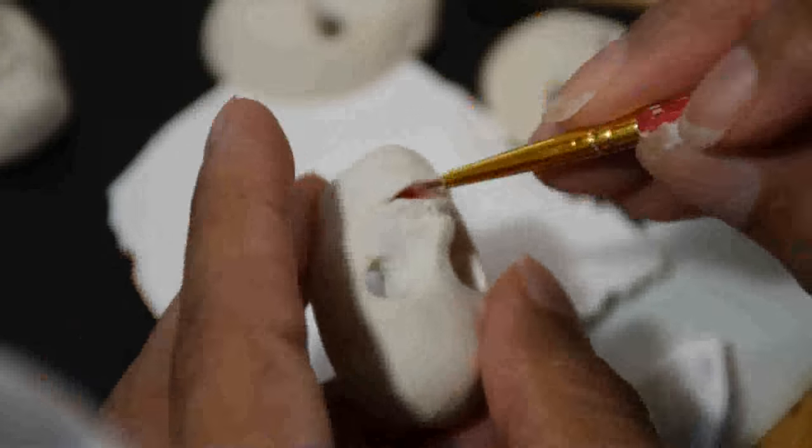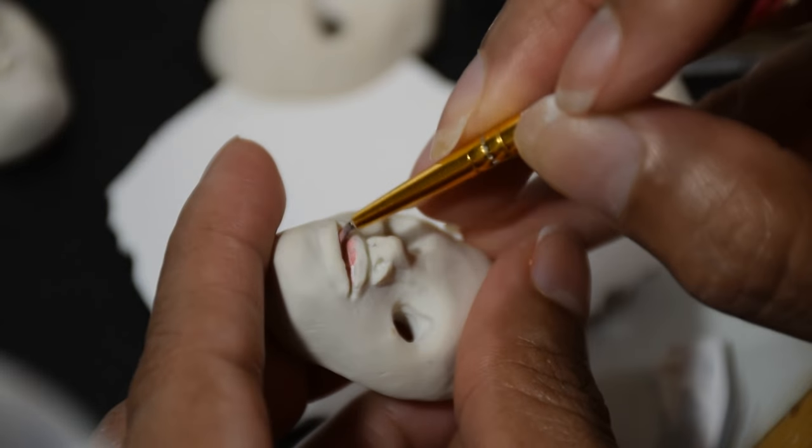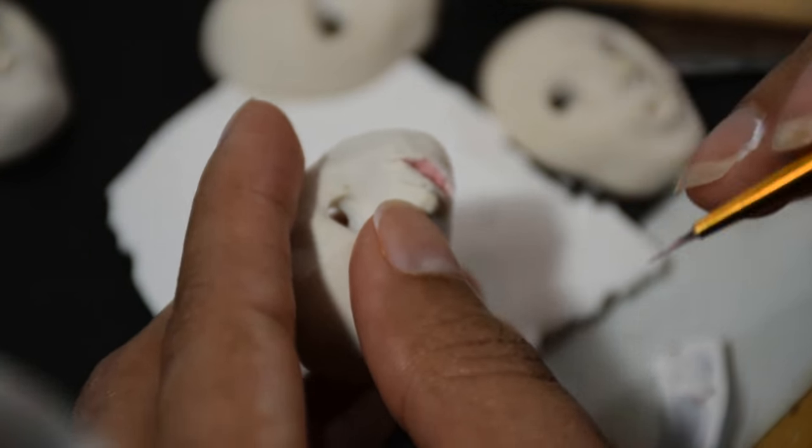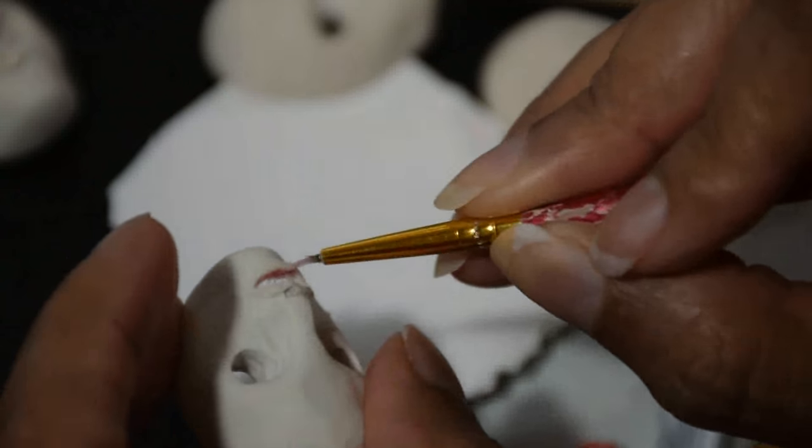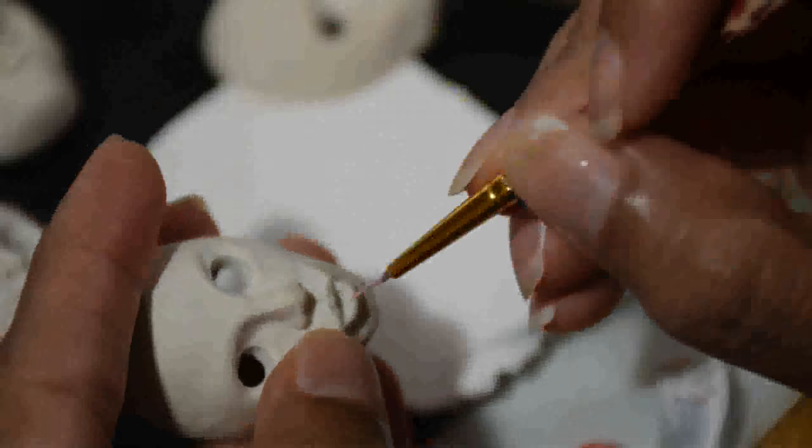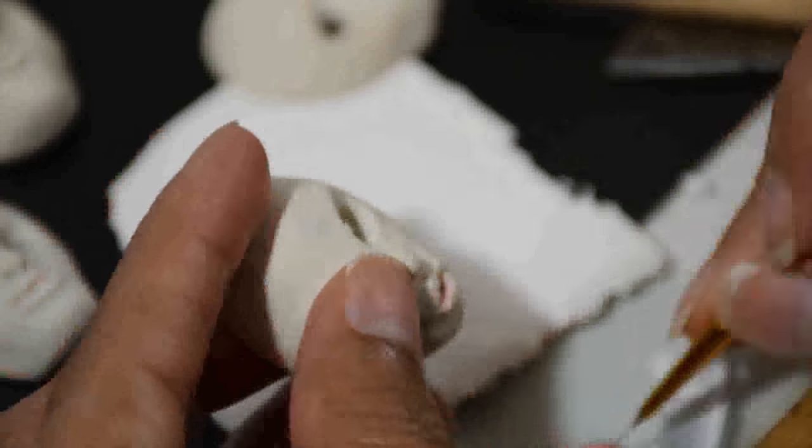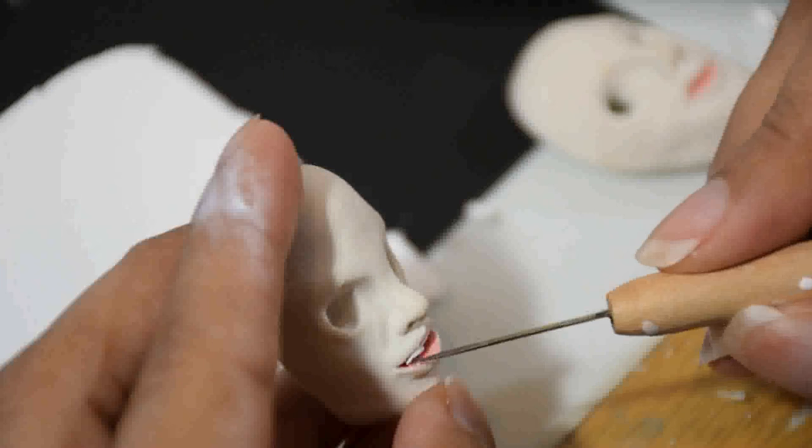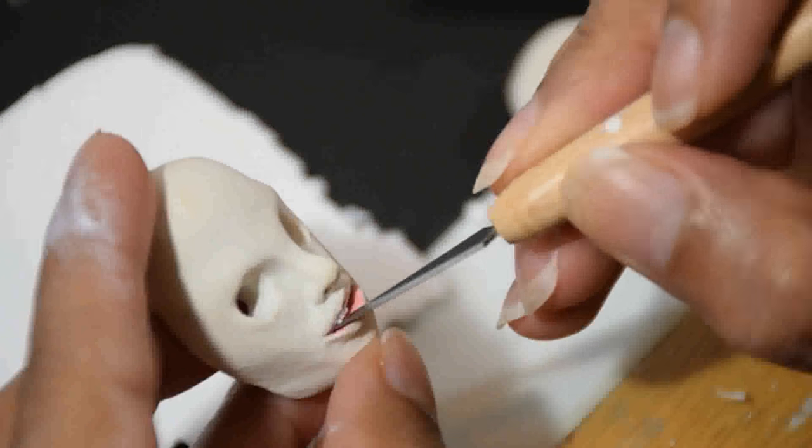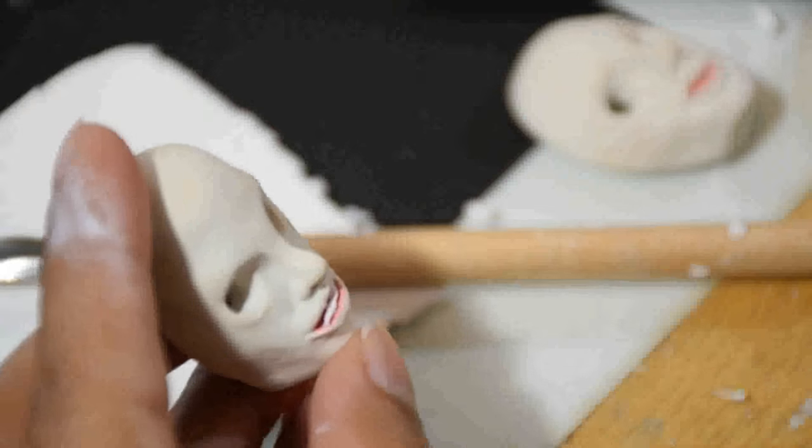For some of the faces that had a mouth that was more open, I just mixed pink and white paint to a flesh tone and carefully painted the inside of the mouth before adding the teeth. Let dry then add the teeth. When complete, bake again.